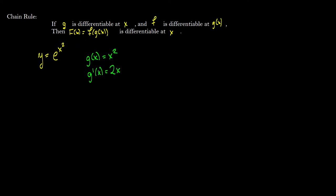Now let's take a look at f of g of x. We say that f is equal to e to the u, so f prime is going to equal e to the u as well. Since g of x is differentiable and f is differentiable, the composite function f of g of x is also differentiable.